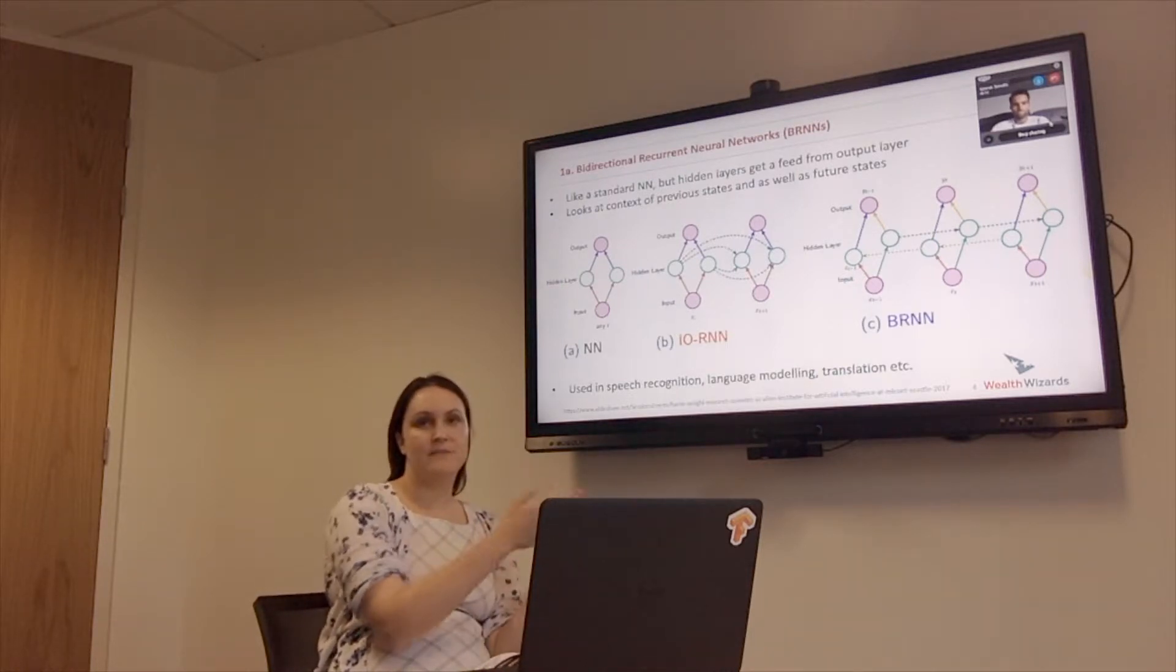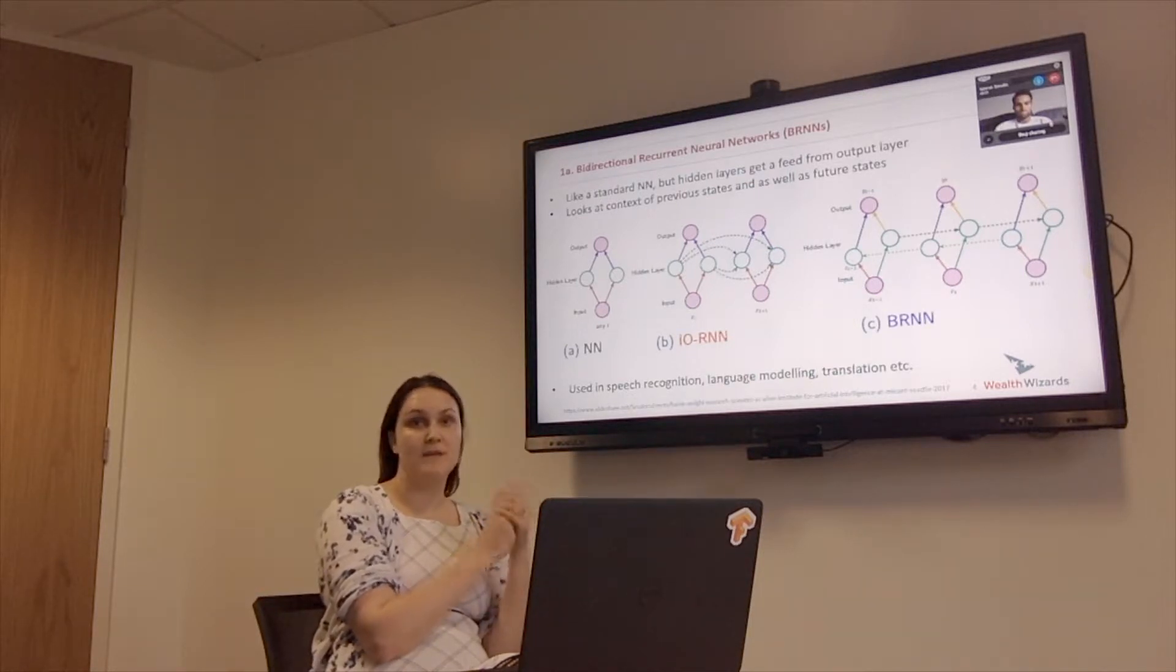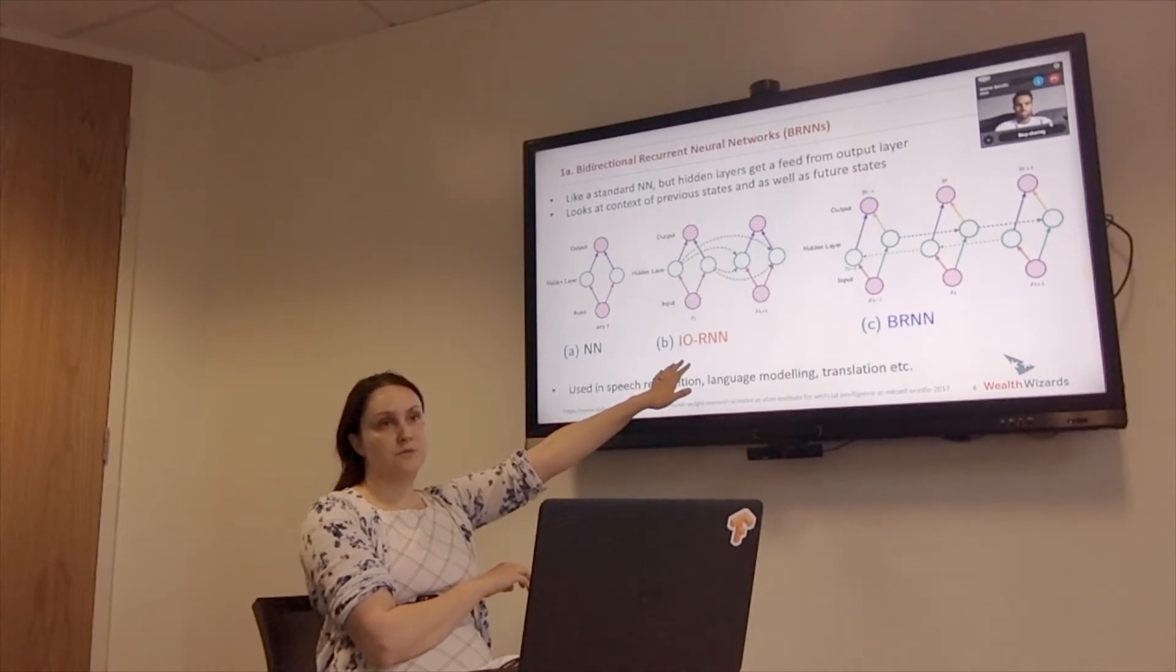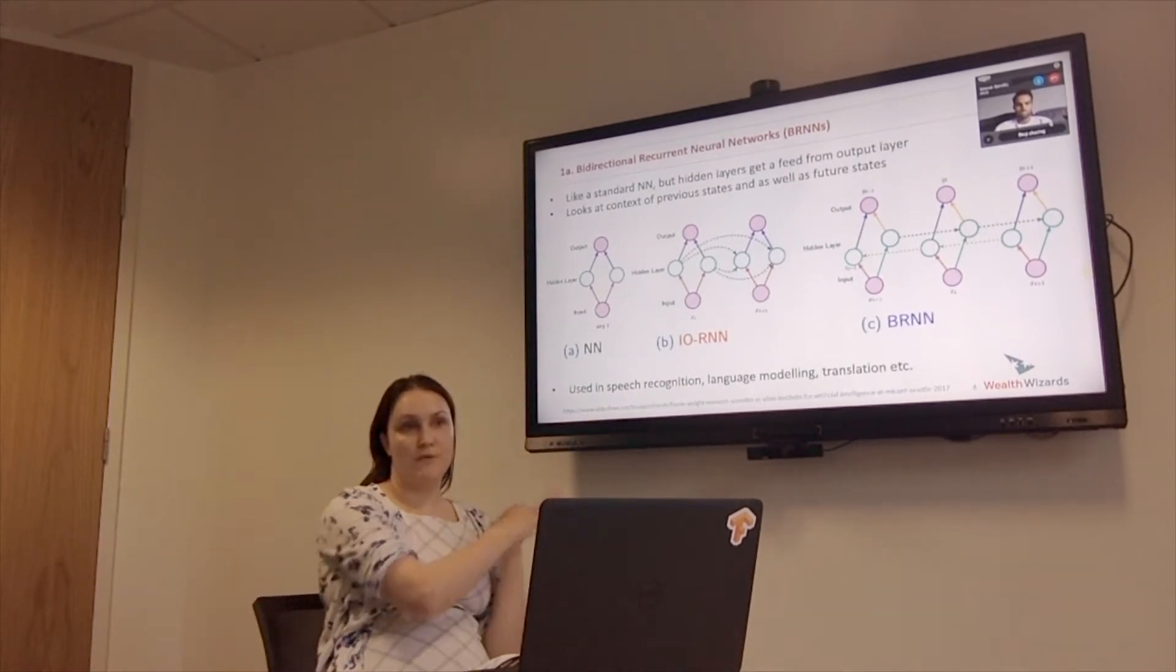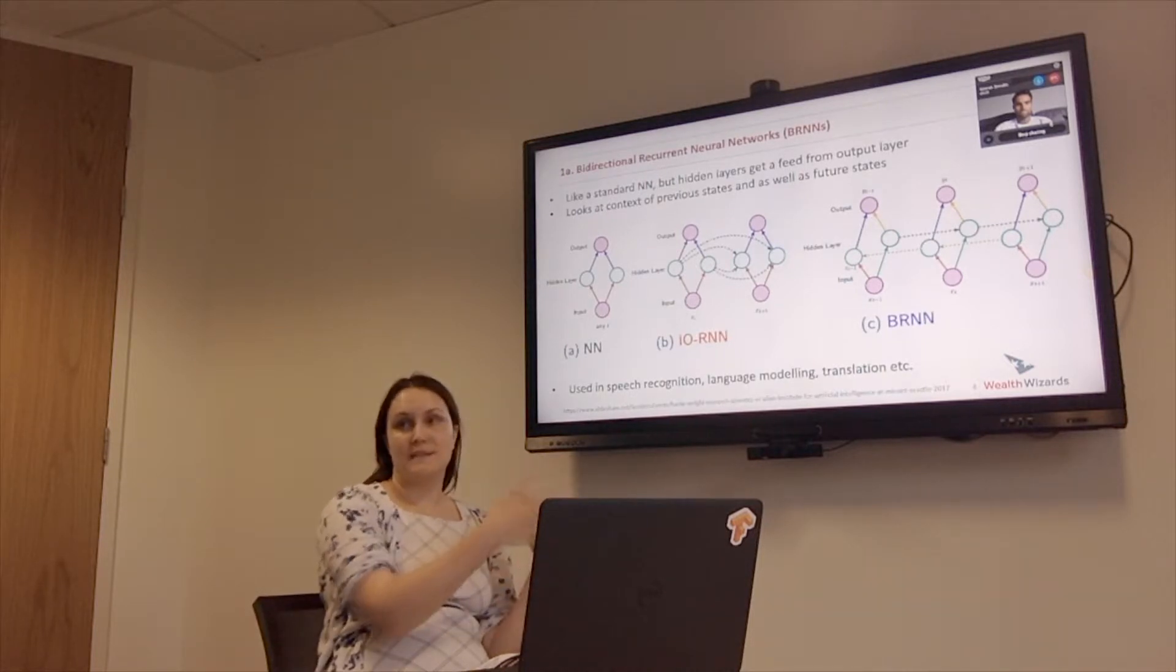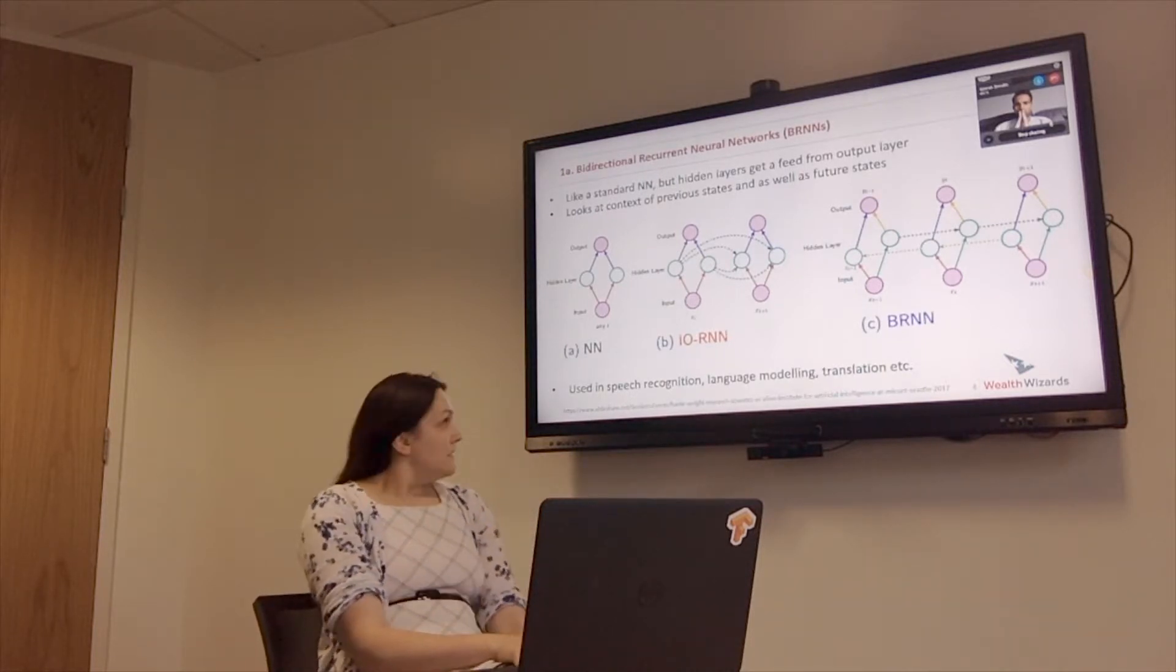But when you get to the next point, what comes after E? Well, it wouldn't know whether it's an E or a P. So that's where a recurrent neural network is awesome because it will look at everything that's come previously. And it will know, okay, we've had S, T and E, so therefore E is next.